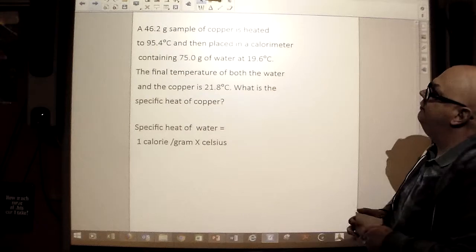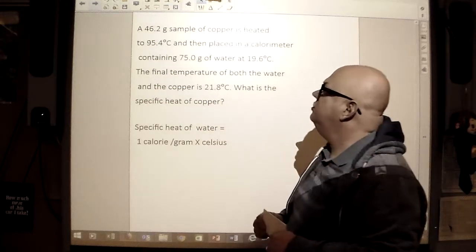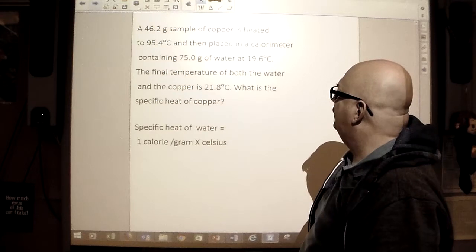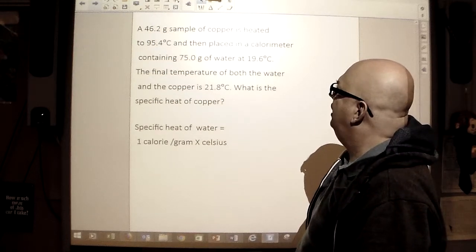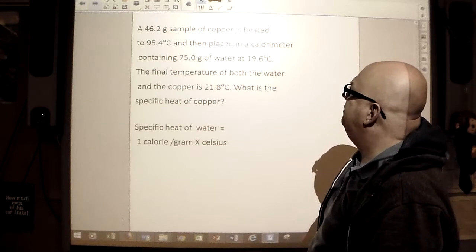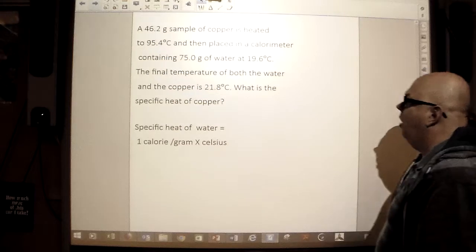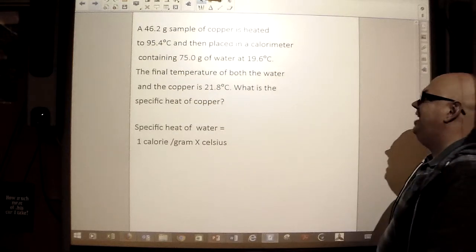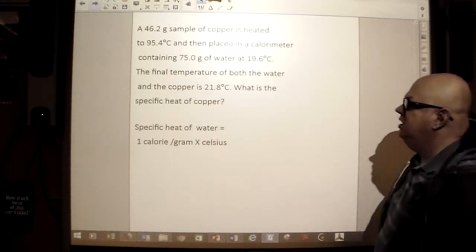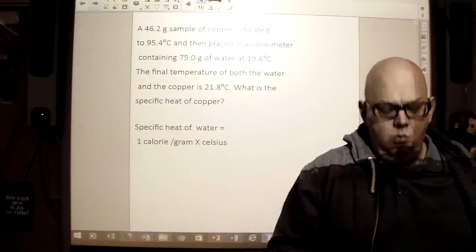Our next one, we have a 46.2 gram sample of copper, is heated to 95.4 degrees Celsius, and then placed in a calorimeter containing 75 grams of water at 19.6 degrees Celsius. The final temperature of both the water and the copper is 21.8. What is the specific heat of the copper, given the specific heat of the water?